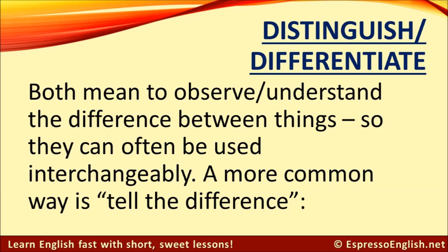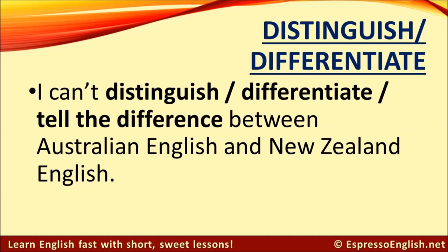Finally, let's look at distinguish and differentiate. Both of these words mean to observe or understand the difference between things, and they can often be used interchangeably. In casual spoken English, a more common way to express this is 'tell the difference.' For example, 'I can't distinguish between Australian English and New Zealand English,' or 'I can't differentiate,' but it's most common to say 'I can't tell the difference between Australian English and New Zealand English.' All three are correct and have the same meaning.